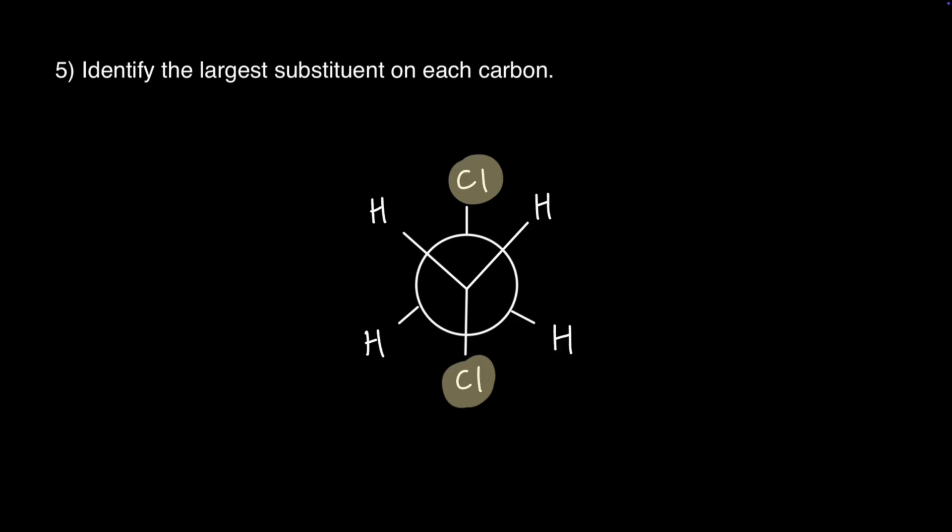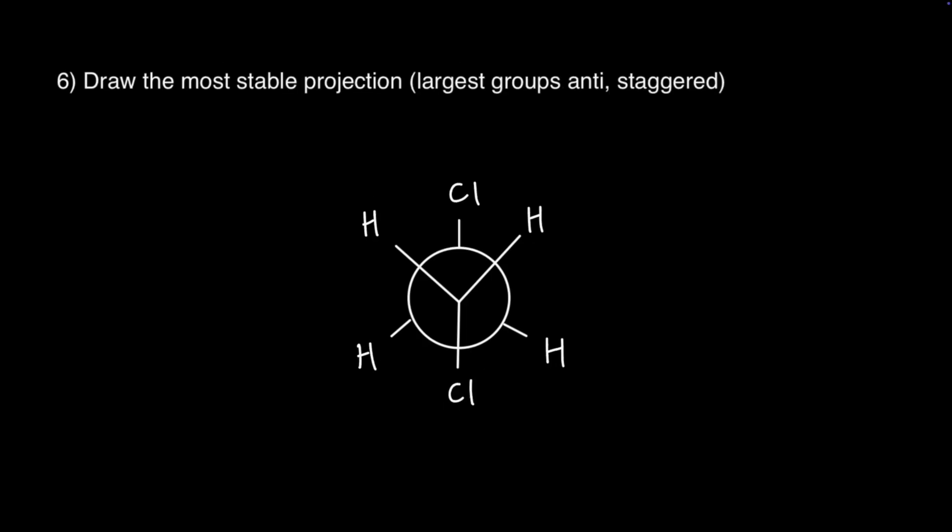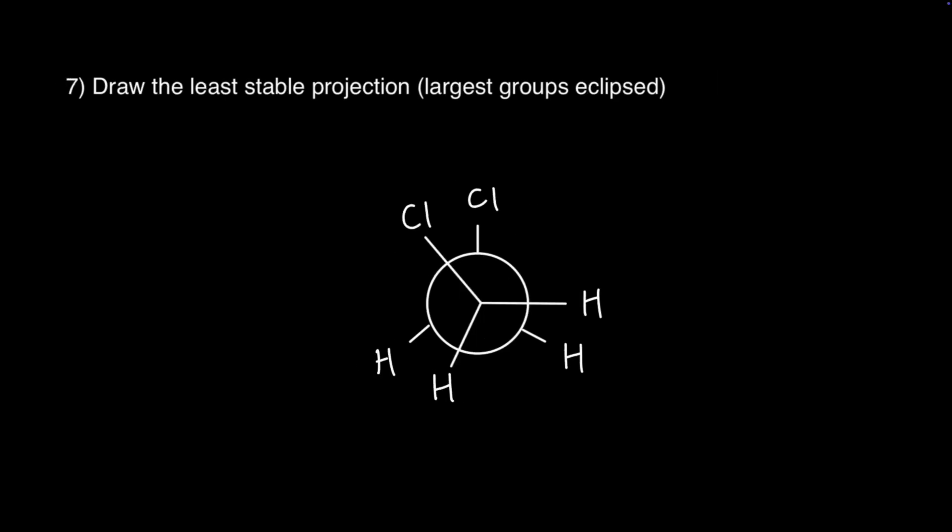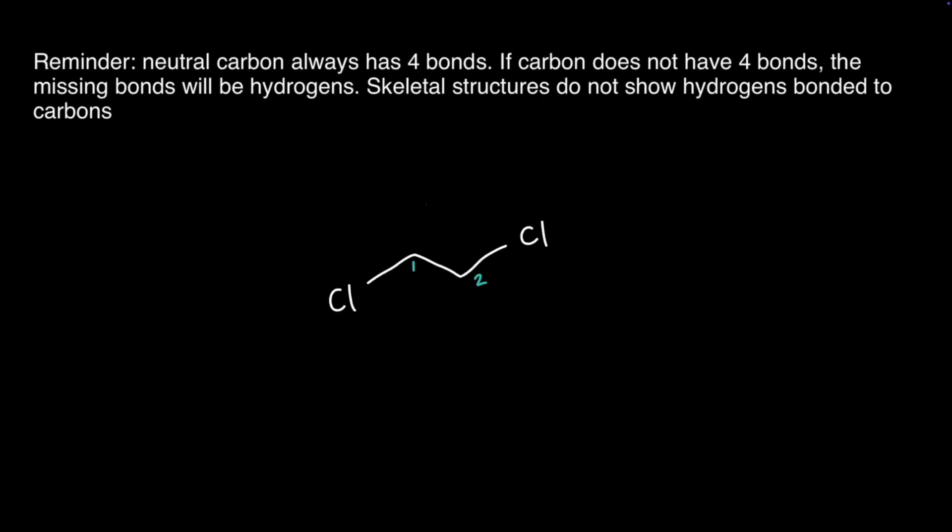Identify the largest substituent on each carbon. Draw the most stable projection — largest groups are anti-staggered. And draw the least stable projection — largest groups are eclipsed.